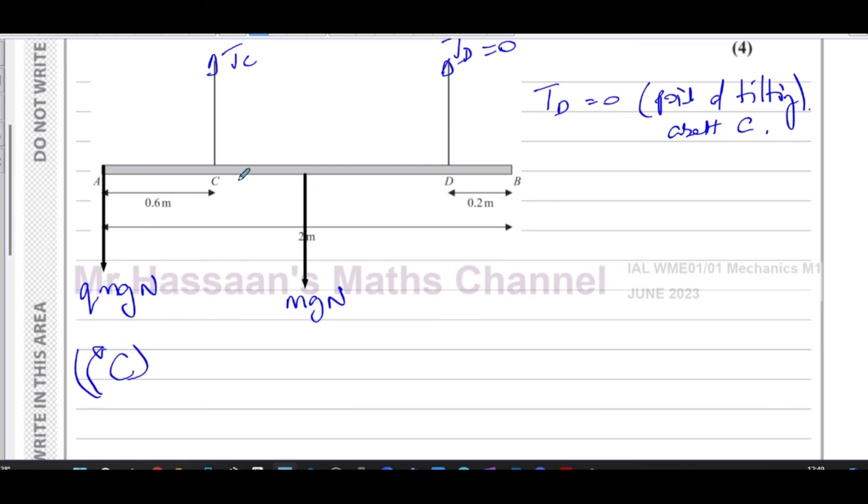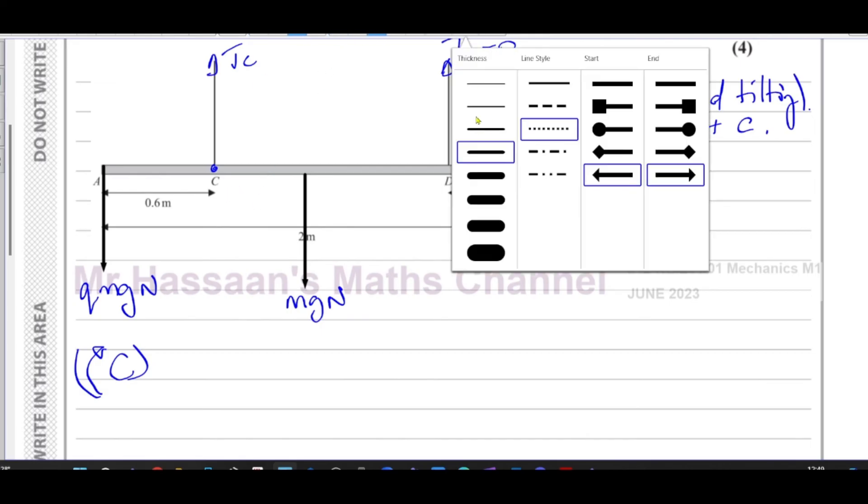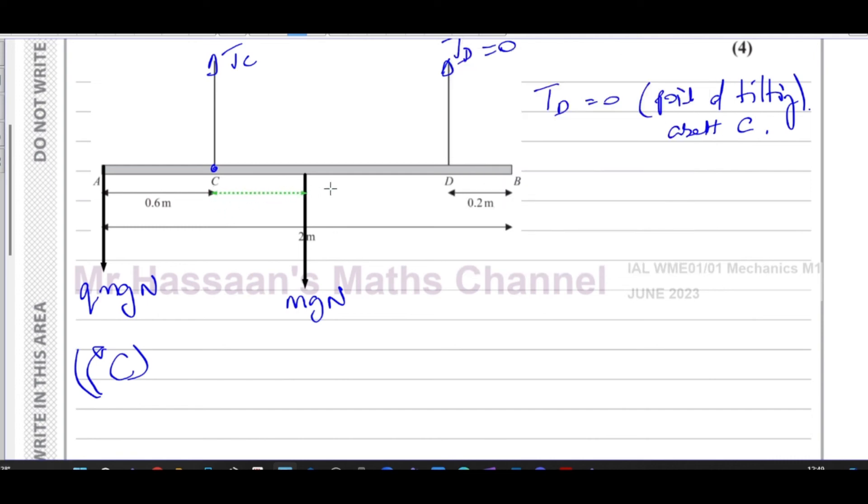If we take moments about C, then we don't have to know what the tension in C is. We just have to deal with these two. So if we take moments about C, then we have this distance to deal with. That distance is from there to there, and that distance is basically 1 minus 0.6, which is 0.4 meters.